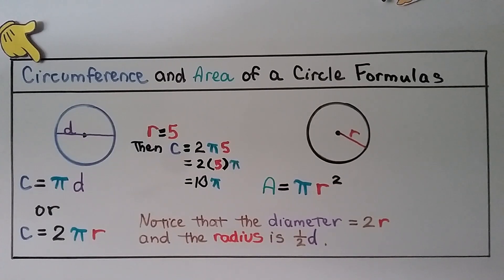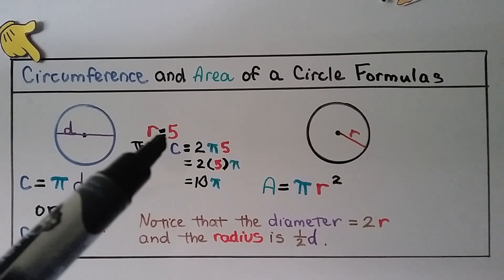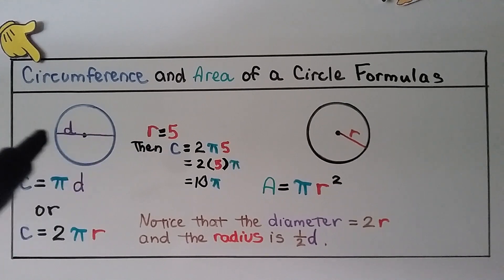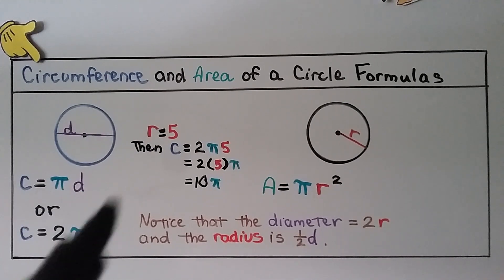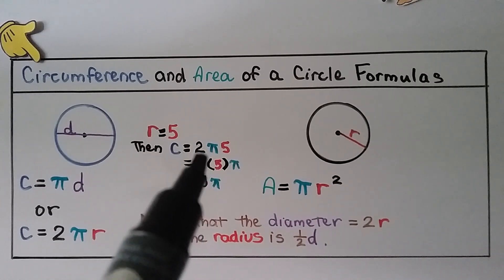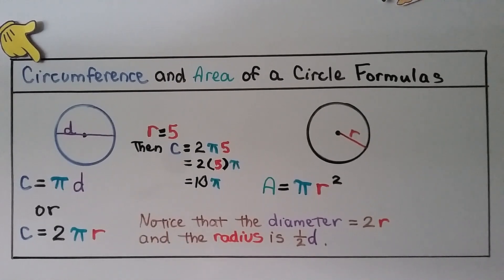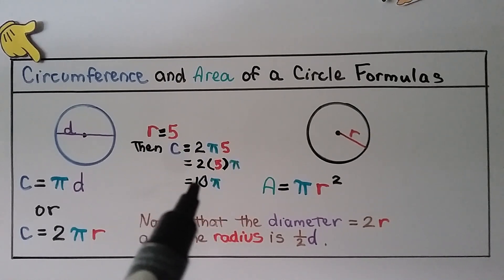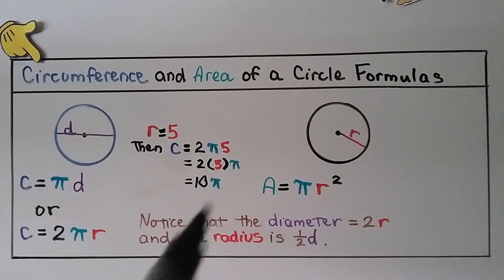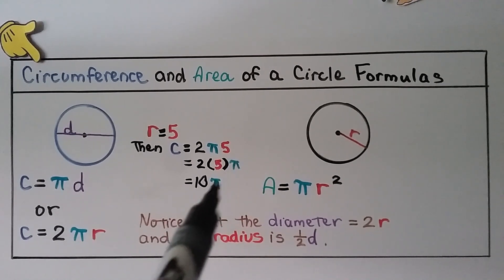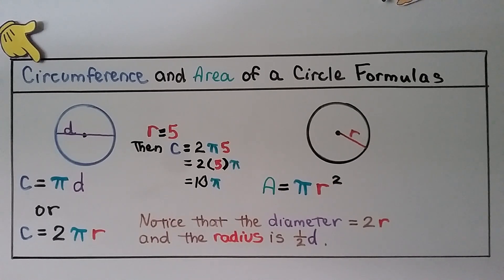To solve in terms of pi, let's say we're finding the circumference of a circle with a diameter of 10, so the radius is 5. Using 2 pi r, the circumference equals 2 times pi times 5. We can multiply 2 times 5 to get 10, and instead of using 3.14, we just write pi — giving us 10 pi. That means we've solved it in terms of pi.